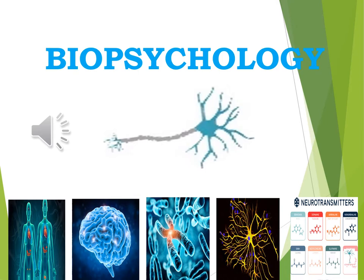Let's see how you did. The first picture represents the endocrine system — the hormone-making glands. The second picture is the brain. The third represents DNA, genes, and all hereditary influences. The next picture is a neuron, which is also the prominent picture on the slide. And the last picture shows the chemicals of the neurons — the neurotransmitters.